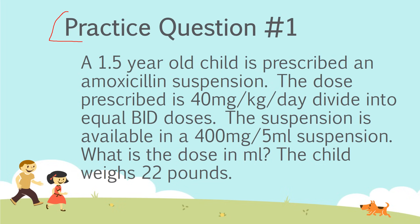Let's look at the first practice question. A 1.5-year-old child is prescribed an amoxicillin suspension. The prescribed dose is 40 milligrams per kilogram per day — so the doctor hasn't prescribed a flat 40 milligrams, but rather 40 milligrams per kilogram per day. It is divided into equal bid doses. The suspension is available as 400 milligrams per 5 milliliters. The question asks for the dose in milliliters, and the child's weight is given as 22 pounds.